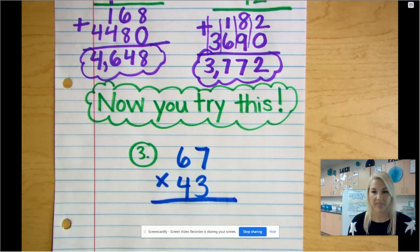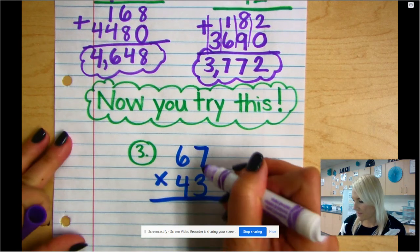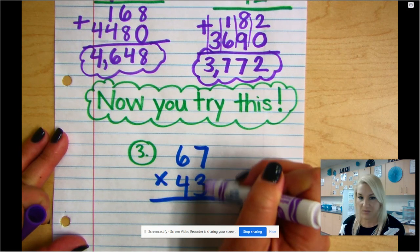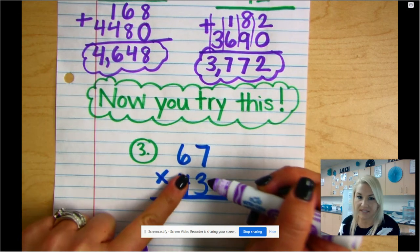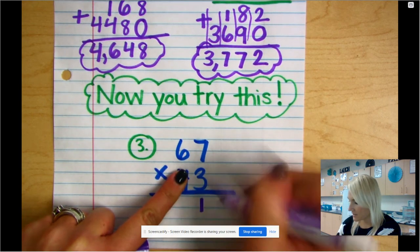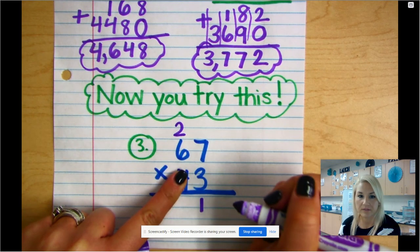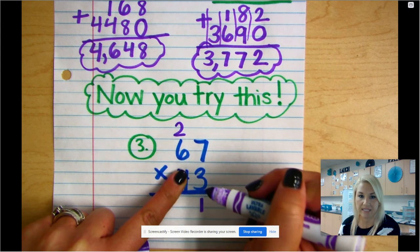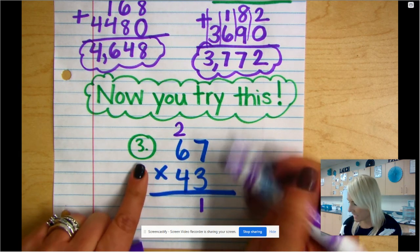And I'm gonna write that in purple. So my first step—hopefully you did this, you paused and you're ready to reveal the answer. 7 times 3. So I'm gonna start, pretend that this isn't here. So 3 times 7 is 21. My 1 here and bring my 2 here. And 3 times 6 is 18, plus 2 gives me 20.